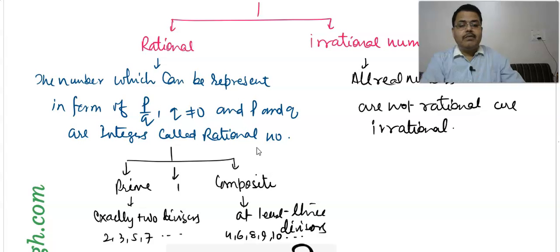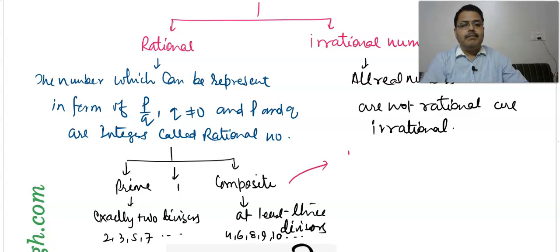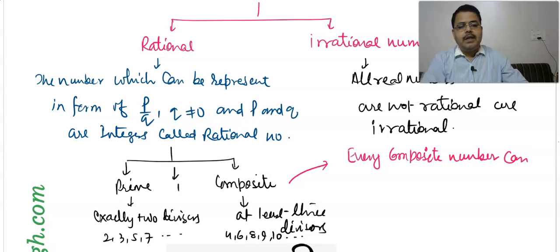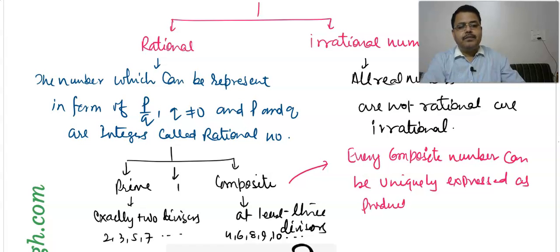What can we do with composite numbers? For example, 10 equals 2 into 5. This means that every composite number can be uniquely expressed as a product of prime factors. This is the fundamental theorem of arithmetic, which we have talked about in the ninth class.